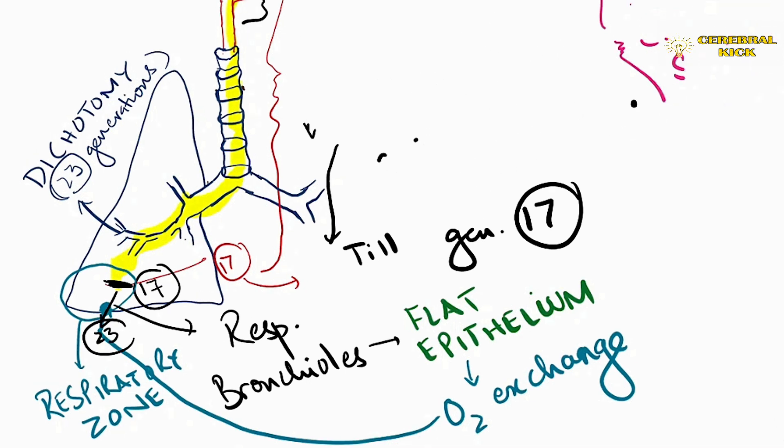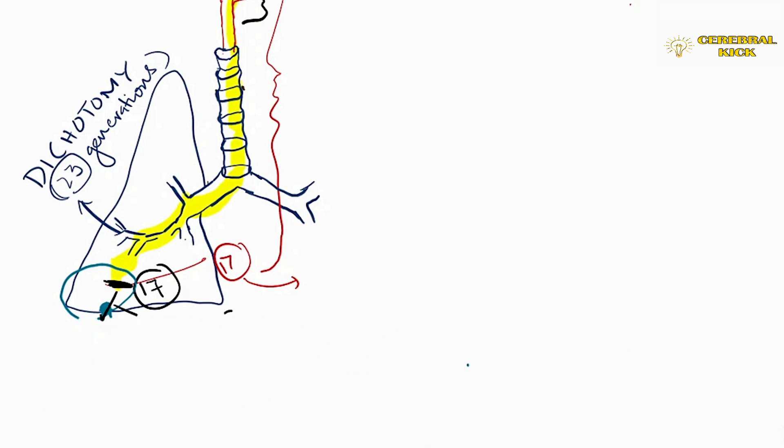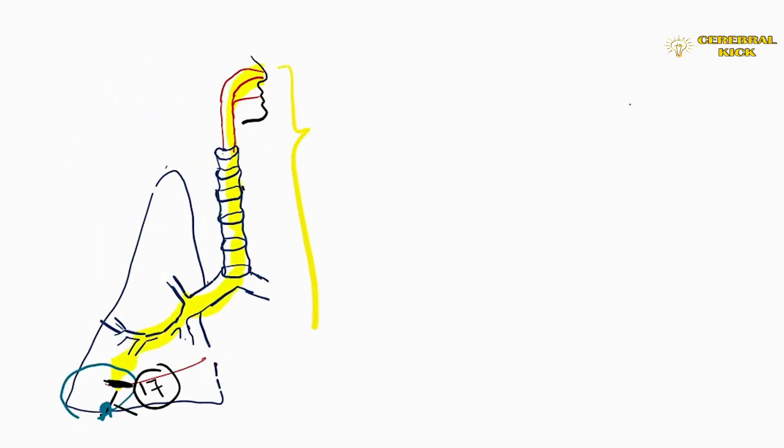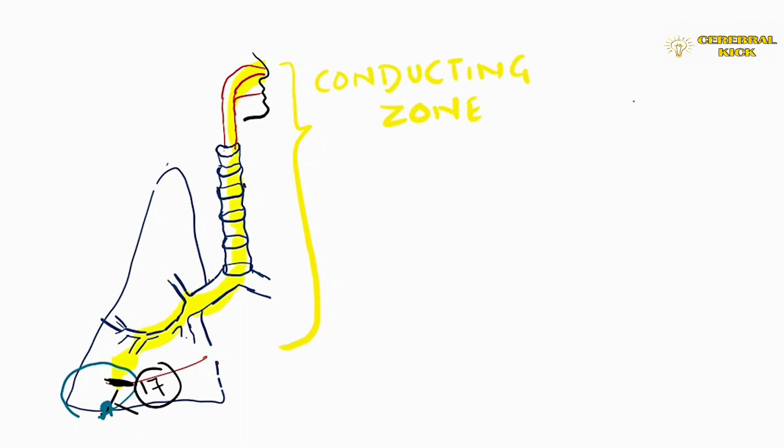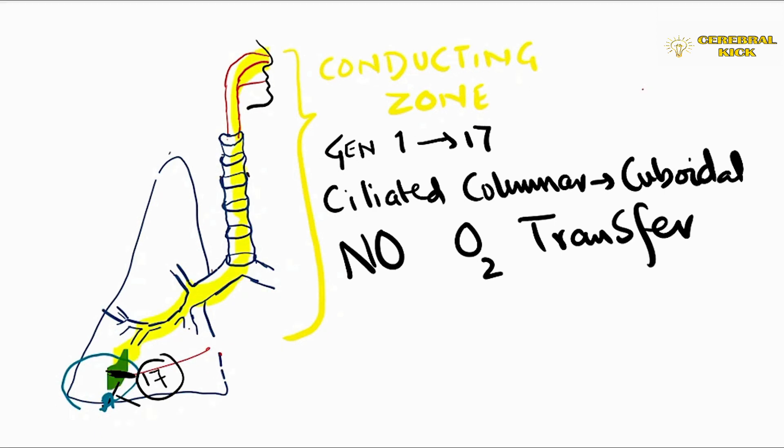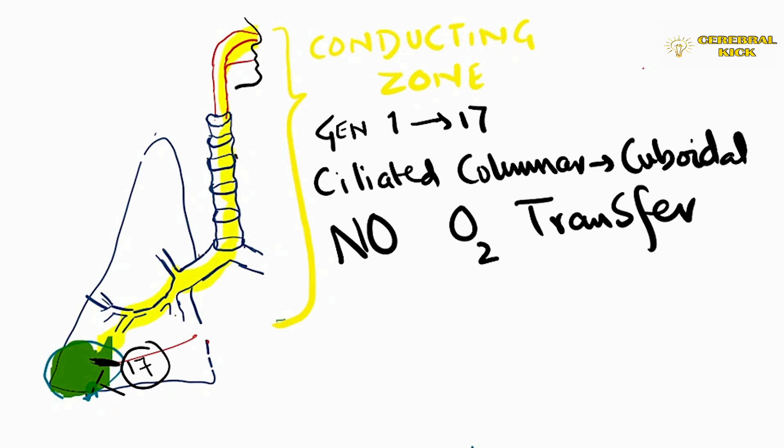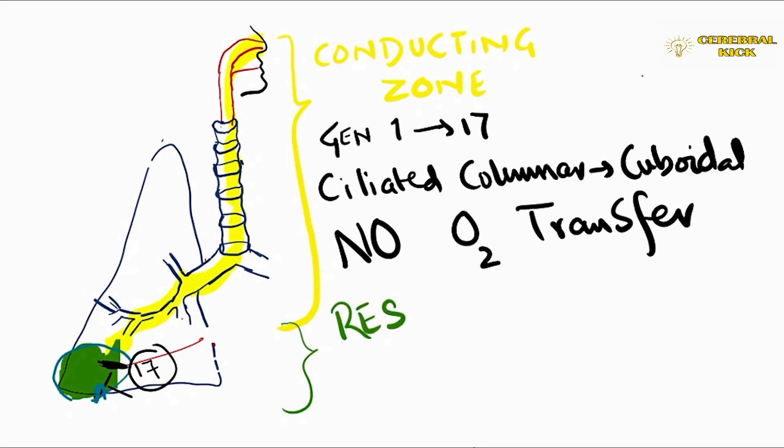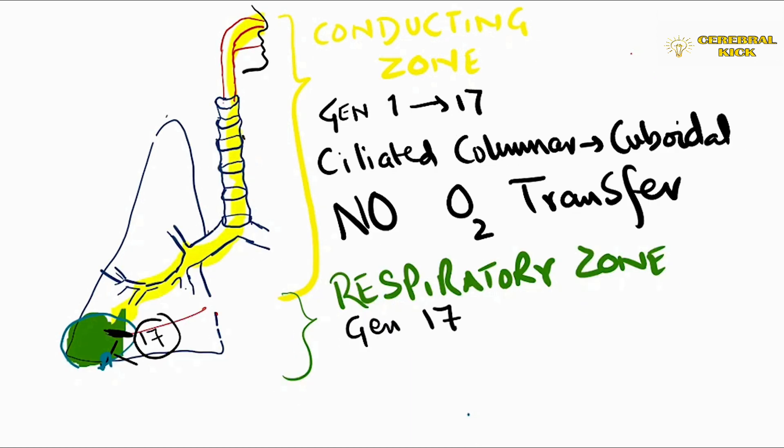Let's revise it again. The conducting zone mainly from generation 1 to generation 17, primarily composed of ciliated columnar epithelium and cuboidal epithelium, and no oxygen transfer takes place, so in other words it is dead space. Whereas the green area marked is the respiratory zone, primarily lined by flat epithelium where oxygen transfer takes place, from generation 17 to 23.